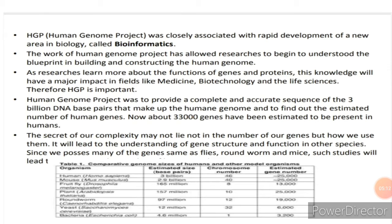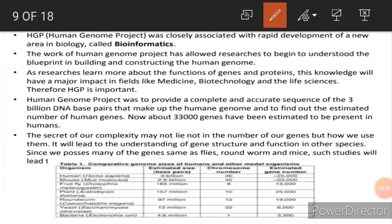The HGP was closely associated with the rapid development of a new area in biology called bioinformatics. The work of the human genome project allowed researchers to begin to understand the blueprint for building and constructing the human genome. As researchers learned more about the function of genes and the proteins they encode, this knowledge had a major impact in the fields of medicine, biotechnology and life science.